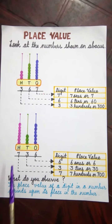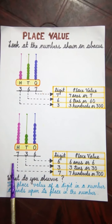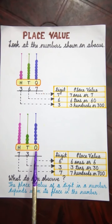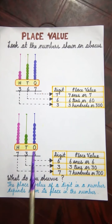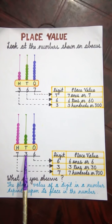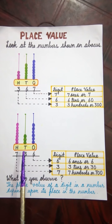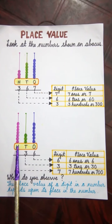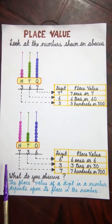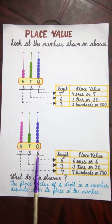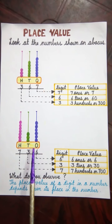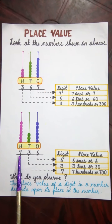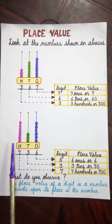Now children, we can take one more example. See here — 6 beads are there in the 1's spike, 3 beads are there in the 10's spike, and 7 beads are there in the 100's spike. So we can write digit 6 in the 1's place, 3 in the 10's place, and 7 in the 100's place.